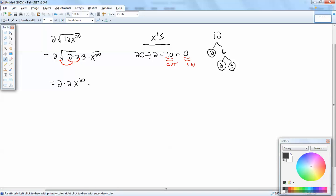So we've got x to the 10th, square root, we're left with the 3 inside, and we said there's no x's left in. So that gives us 4x to the 10th square root of 3, and that's our answer.